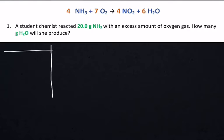So let's create our known and unknown table. We know a couple things. 20 grams NH3. We're looking though, I always start with what we don't know. We're looking for grams H2O. So we're going to put that into our unknown column. That 20 grams of NH3 goes into our known column.